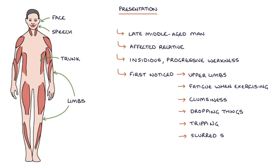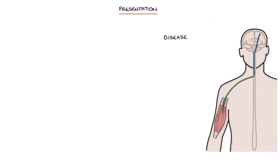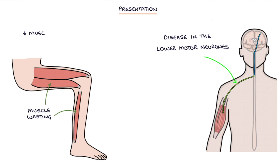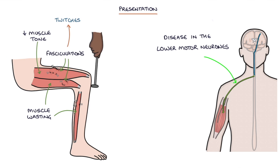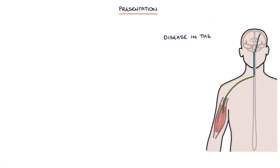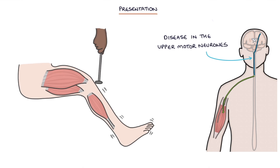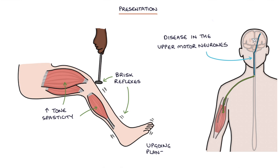Patients may develop slurred speech, which is called dysarthria. Signs on examination of lower motor neuron disease are muscle wasting, reduced muscle tone, fasciculations — which are twitches in the muscles — and reduced reflexes. Signs on examination of upper motor neuron disease are increased tone or spasticity of the muscles, brisk reflexes, and an up-going plantar reflex.